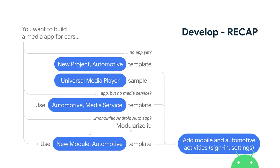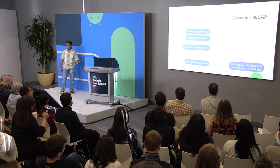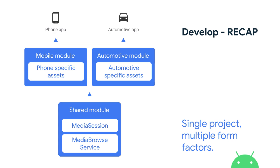Unlike your phone app ported to work on projected, you have to think about adding sign-in and settings. In the case of projected, these things can happen on the phone, whereas with Automotive OS — because it is standalone — you have to develop a couple of these activities. At the end of the day, when you have ported everything, you'll have a shared module including media session and media browse service, plus form-factor-specific modules: one for mobile (which may also include projected support) and an automotive app module with automotive-specific assets like sign-in and settings. Majority of the code is shared, so if you already have a media app supporting Android Auto projected, adding automotive support will be extremely straightforward.